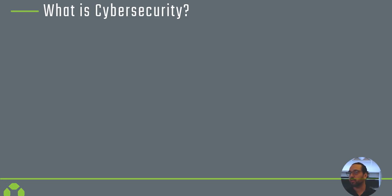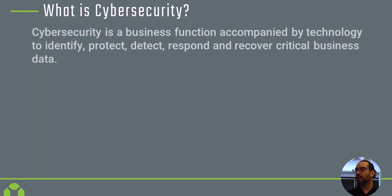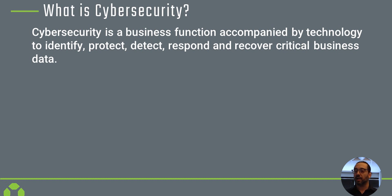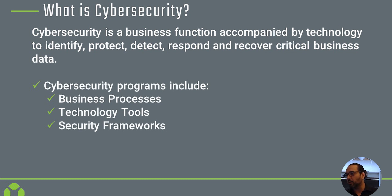What is cybersecurity? First and foremost, it is a business function accompanied by technology to identify, protect, detect, respond, and recover critical business data. A cybersecurity program includes business processes, technologies and tools, and security frameworks. Today we're going to talk about all three, which is why we defined cybersecurity first — so you understand why we're discussing zero trust, which is a subset of a cybersecurity program.